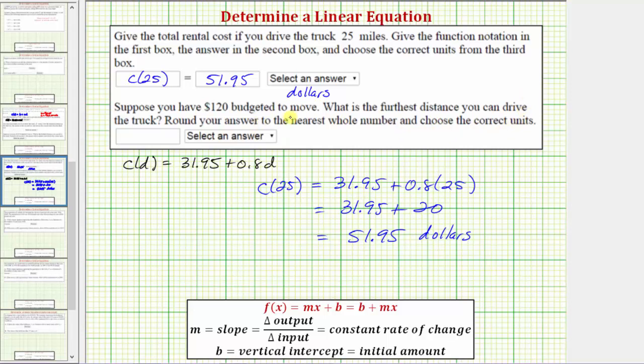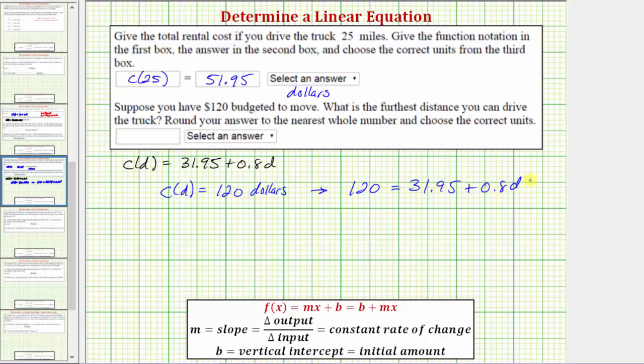Here, they're giving us that C(D) = 120, and we'll substitute 120 for C(D) and solve for D. If C(D) = $120, we substitute 120 for C(D), giving us the equation 120 = 31.95 + 0.8D. We'll isolate the variable term by subtracting 31.95 from both sides.